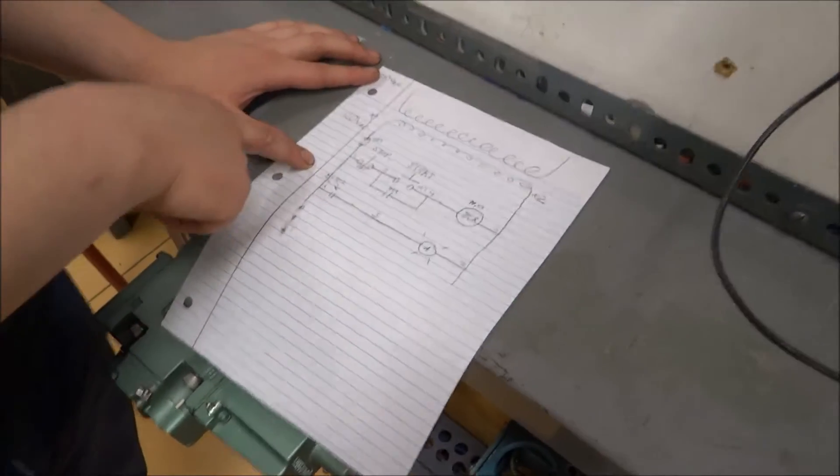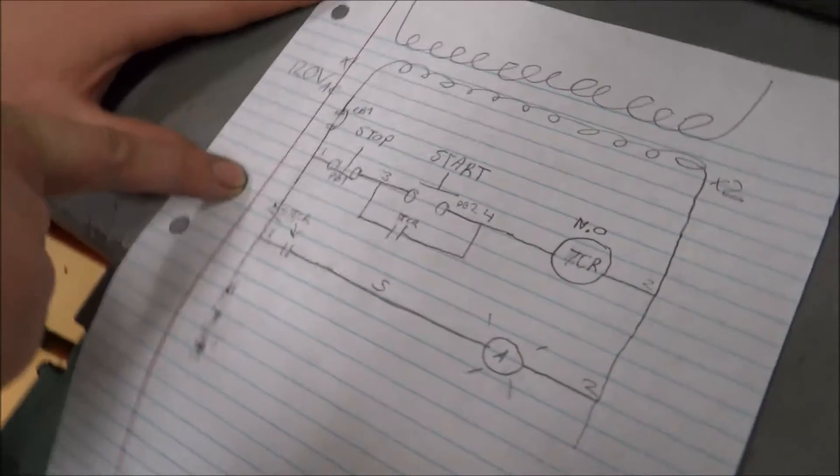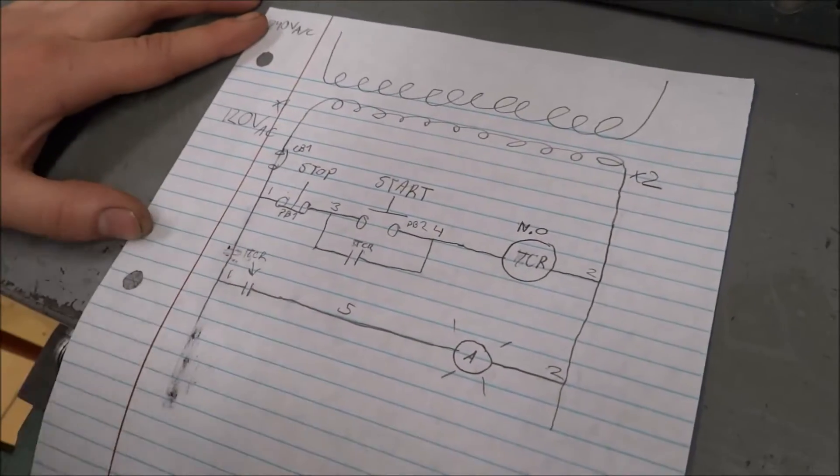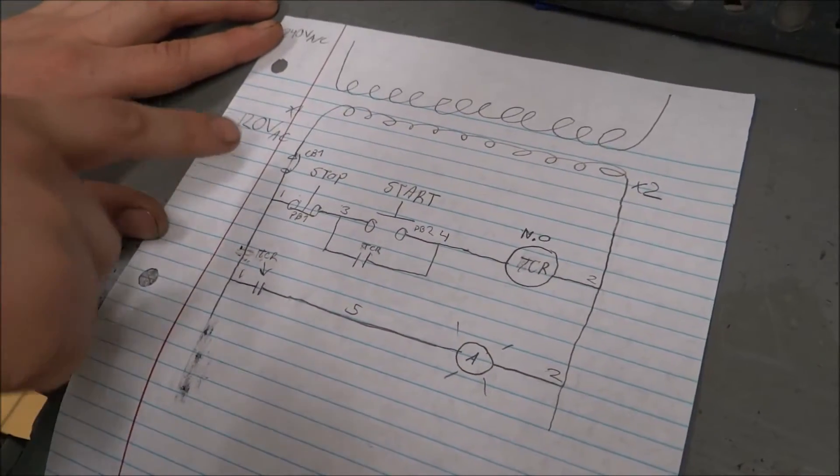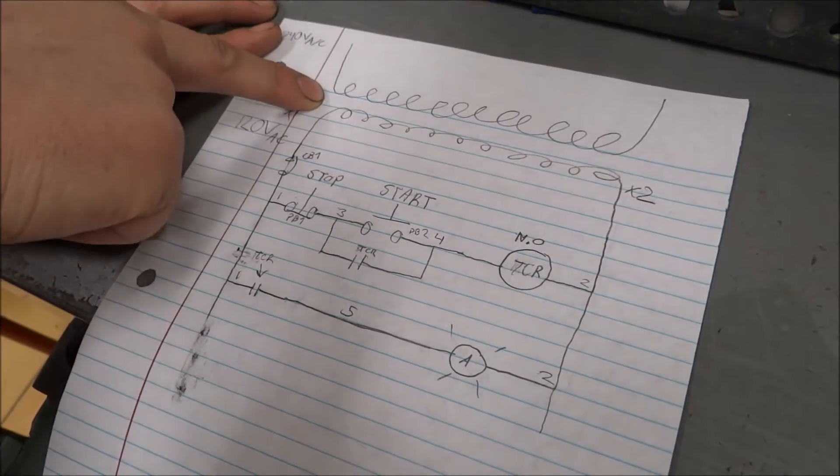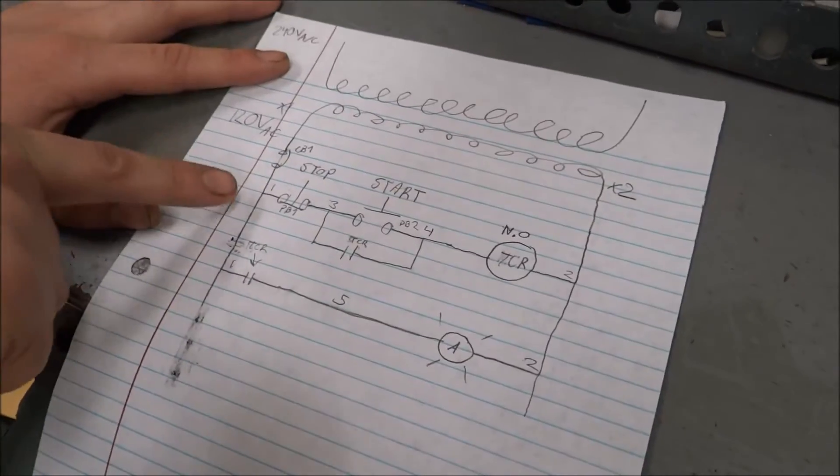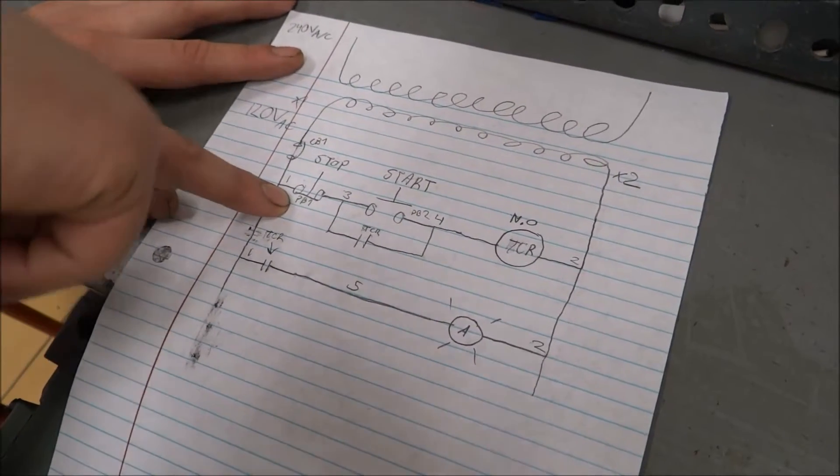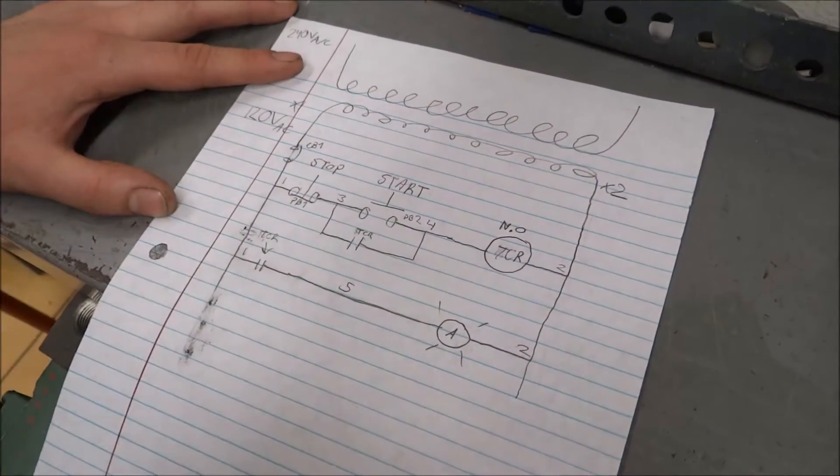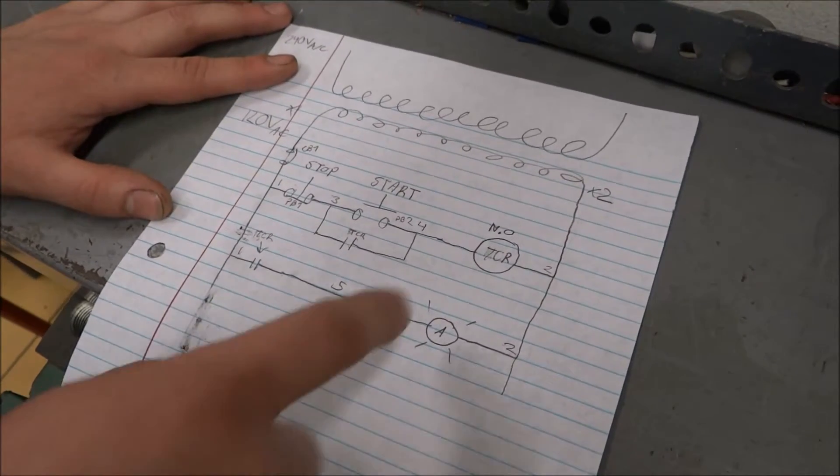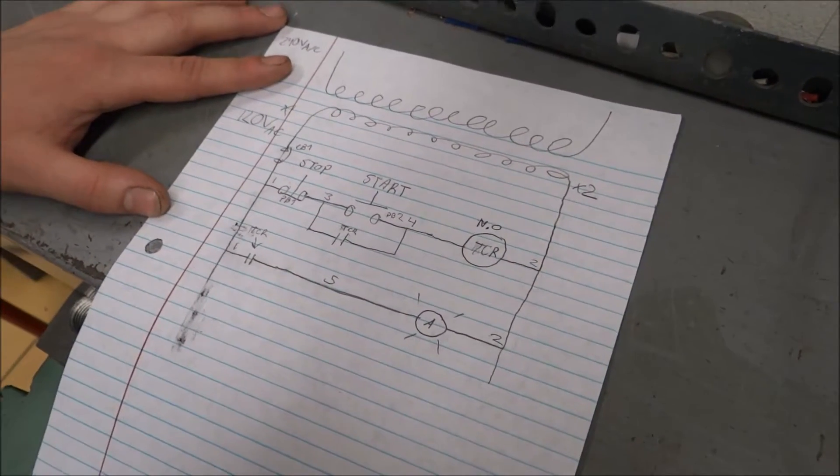Here we have our line diagram of our timed off delay timer. We have it hooked up to a transformer, coming into a breaker. The breaker goes into a stop button, which is push button 1. That leads to the start button, which leads to a timed control relay.